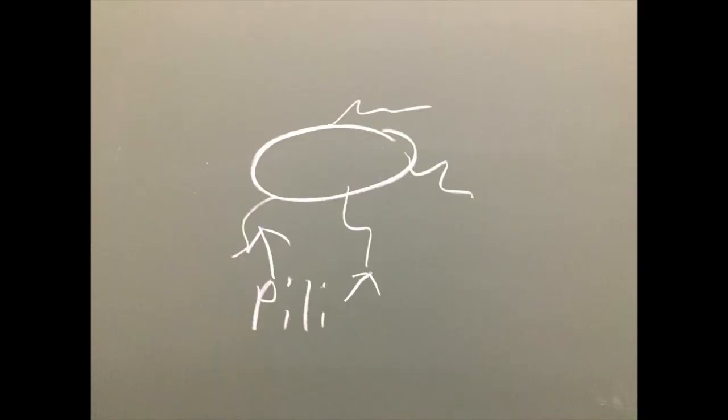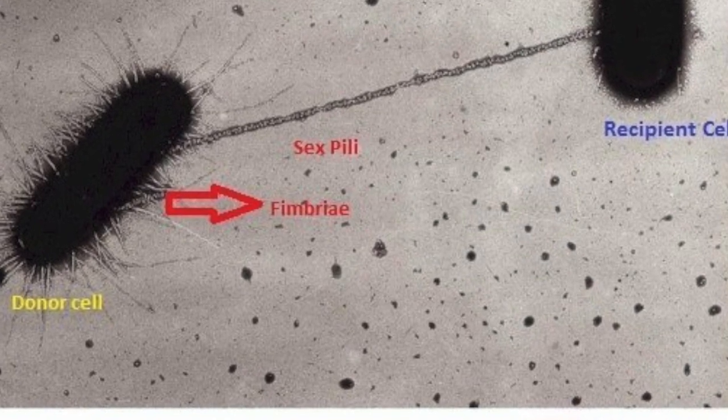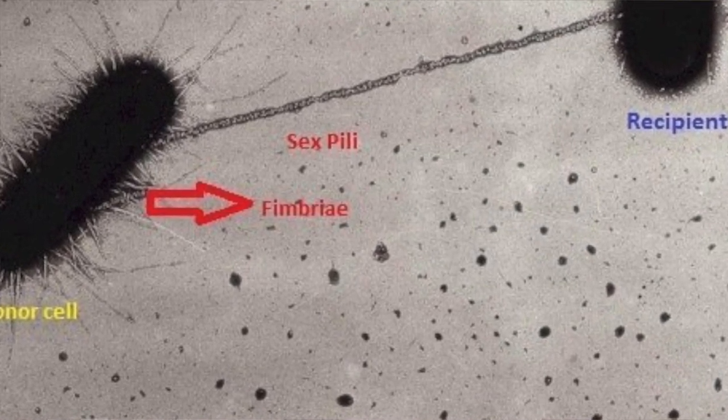Pili are small hair-like structures that grow on the outside of bacterial cells. There are two main types of pili. The first is conjugative pili, which allow bacteria to mate and exchange beneficial DNA with each other. One of the most well-known traits exchanged in this way is that coding for multi-drug antibiotic resistance.